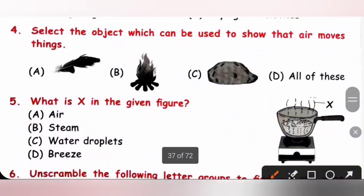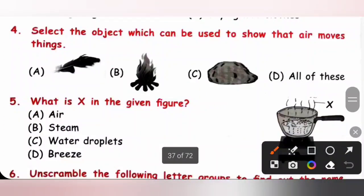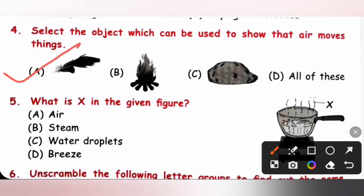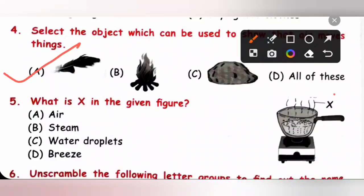Question 4: Select the object which can be used to show that air moves things. Out of the options, a feather can be used to show that air moves things. Option A is the correct answer.